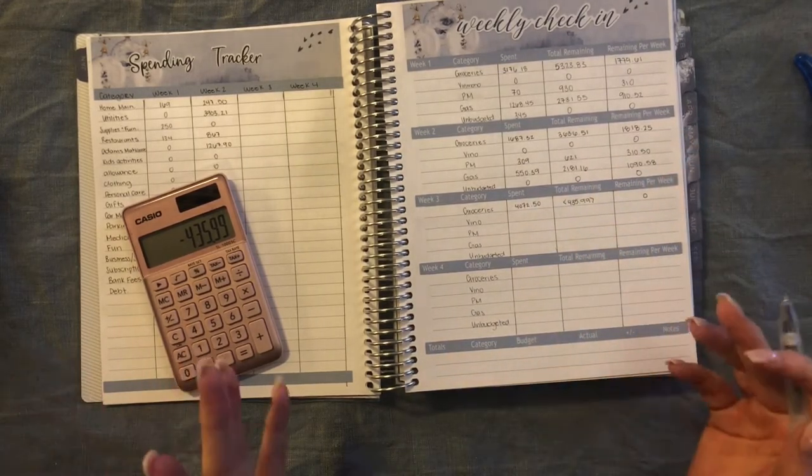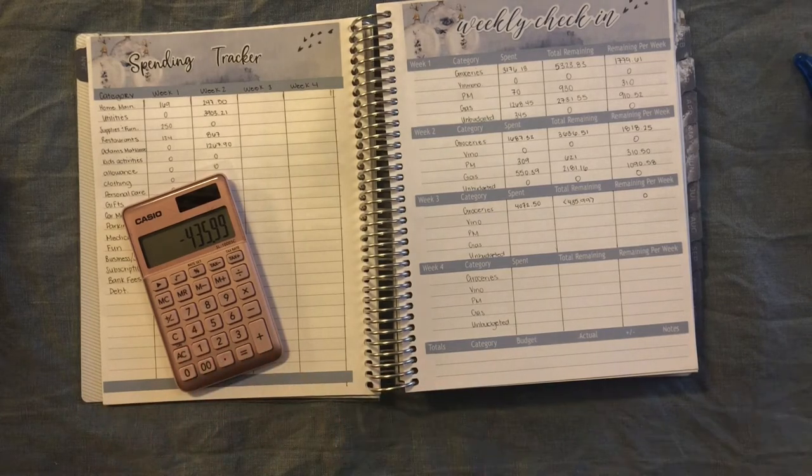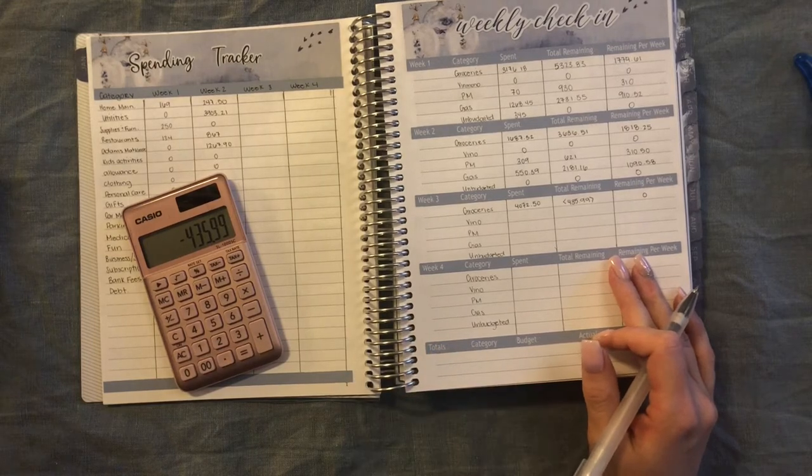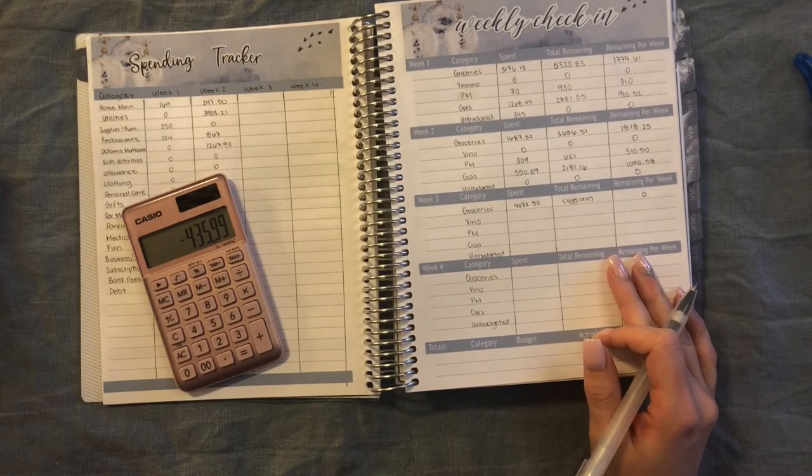Our grocery budget is the biggest budget that we have for the entire month. We have this problem for a while now that we just go over and make random trips to the grocery store every day, and it blows our budget. So it's something we are working on actively.